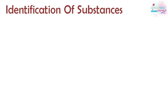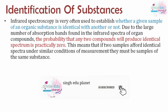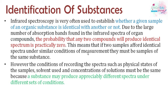The first application is the identification of substances — to identify whether two substances are identical or not, meaning whether two substances are the same or different. The probability that two different compounds produce the same spectrum is essentially zero, meaning two different samples always produce different spectra.